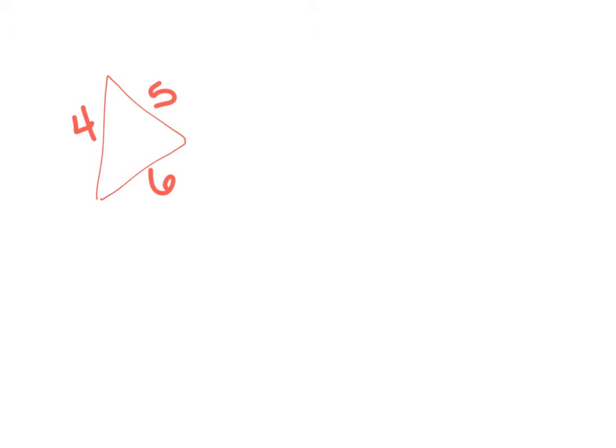In the last video you learned about the triangle inequality theorem, which tells you that if you add any two sides of a triangle, it has to be bigger than the third side. So it doesn't matter what two sides you pick — if you add them together, it must be bigger than the third side. Now we learned a little shortcut: if you always test the two smallest sides and they're bigger than the third side, then all the rest of the sides will work.